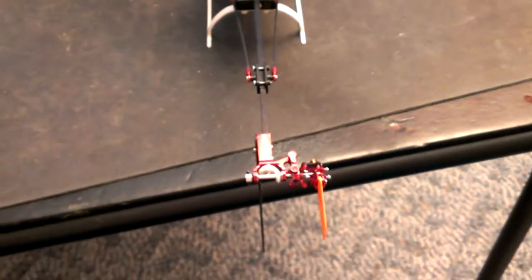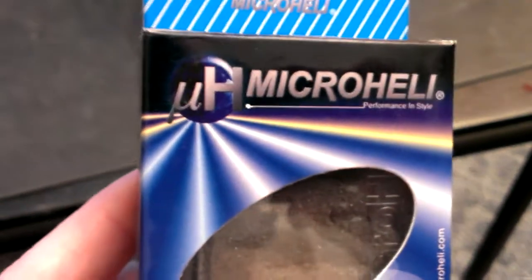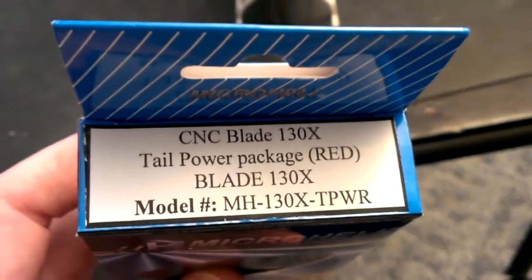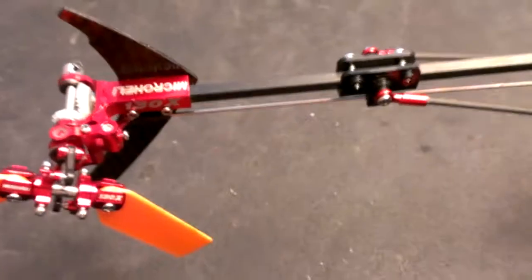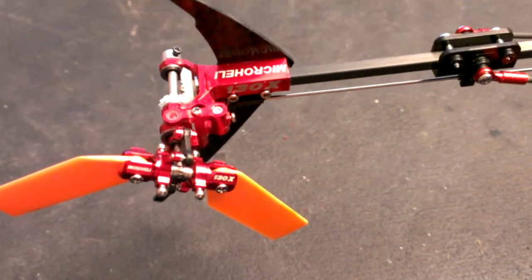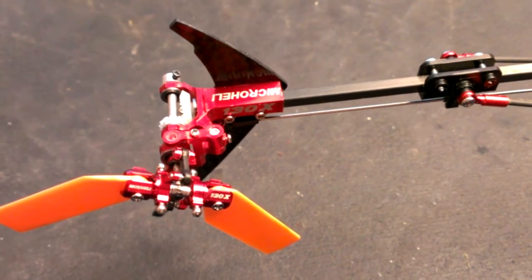Hi, Skullbiker here. I just bought the MicroHeli Tail Power Package in red for the Blade 130X. It came with all these new fancy tail parts, and to be honest with you, I regret it.